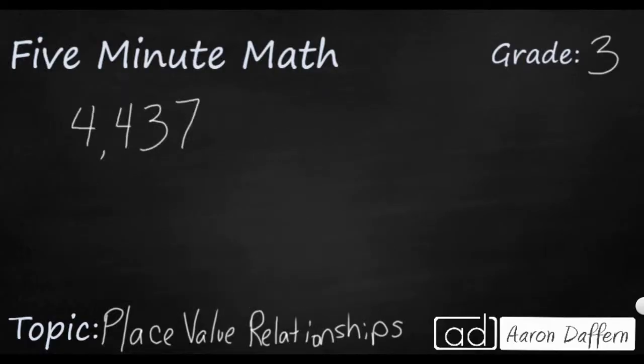Now let's practice. You see the number 4,437. I want you to take a moment, and I want you to see if you can find two digits in this number, 4,437, that are exactly 10 times apart, where we see this relationship of one digit being exactly 10 times greater than another digit. Go ahead and pause the video, see if you can figure that out and explain why. And then unpause the video, and we'll look for the answer.